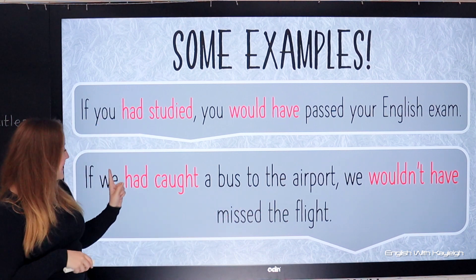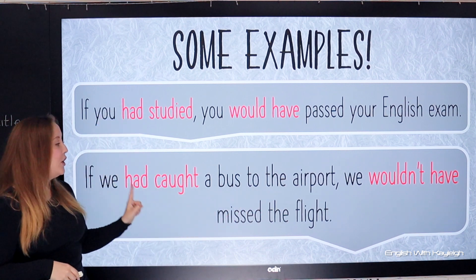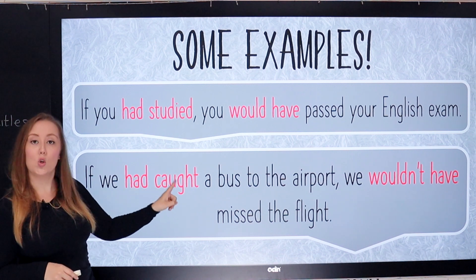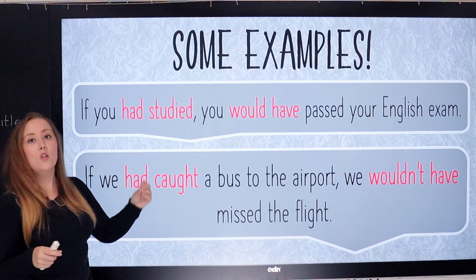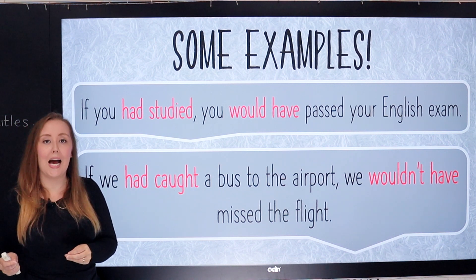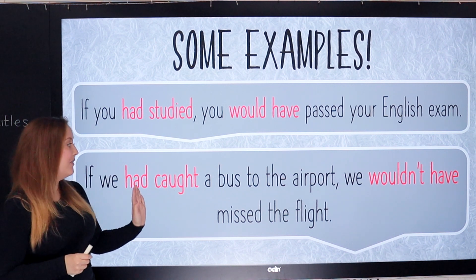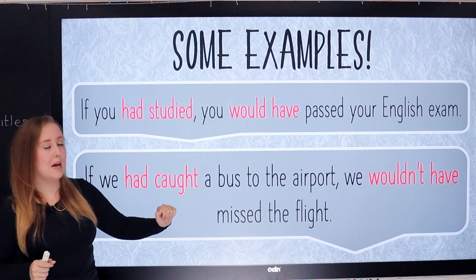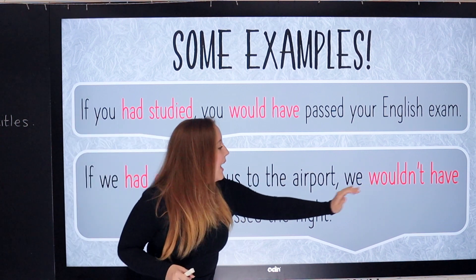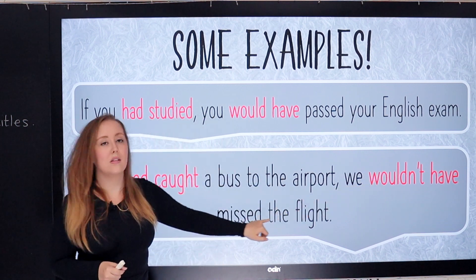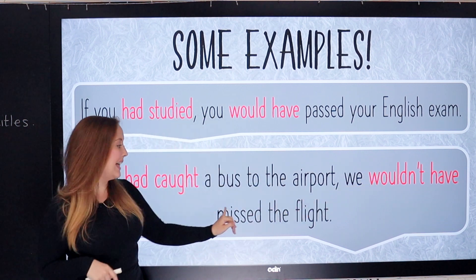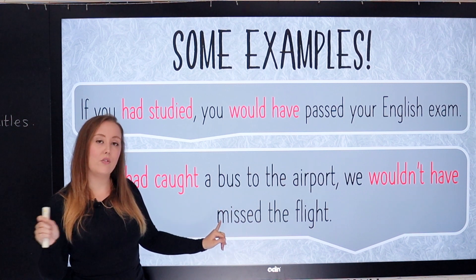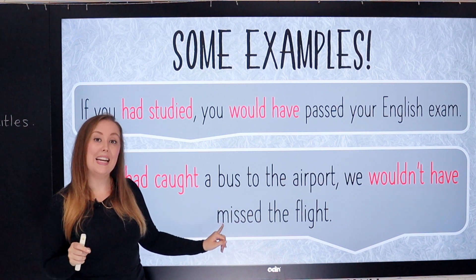To break it down: here we have the past perfect — 'had caught.' So this didn't happen. But if they had caught a bus to the airport, they wouldn't have missed the flight. Because 'miss' is a regular verb, we just add -ed.